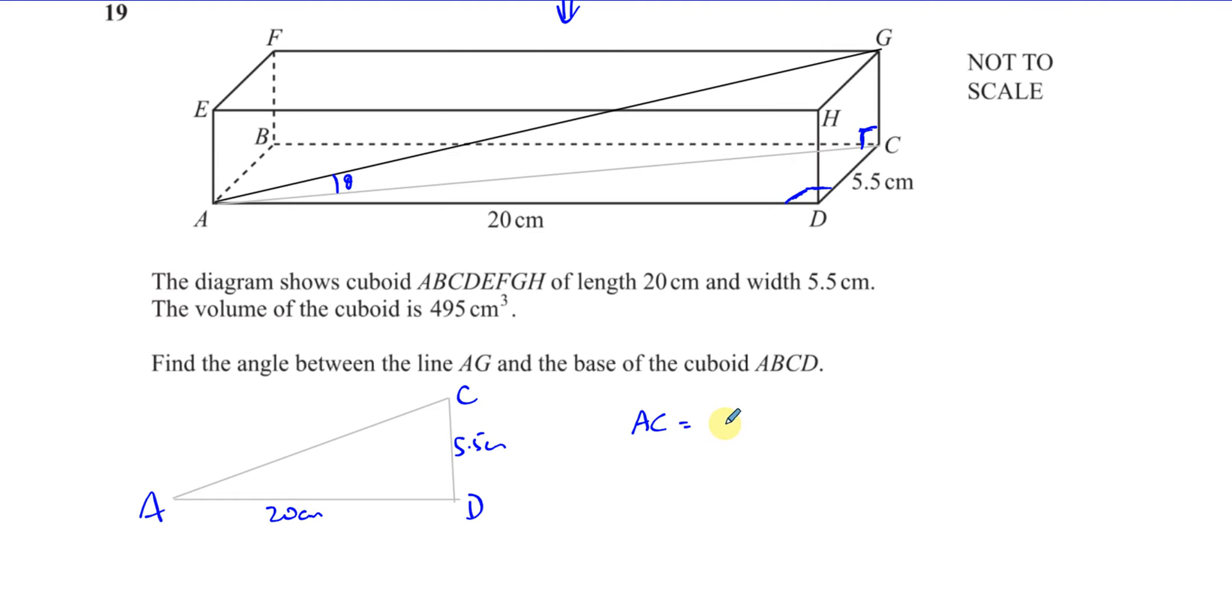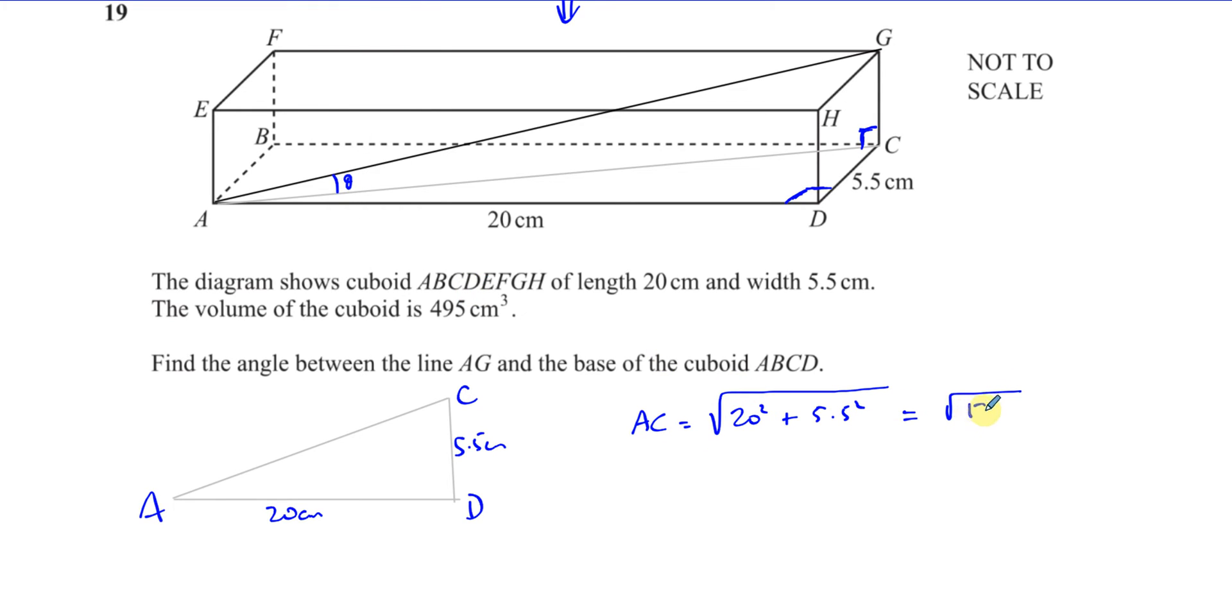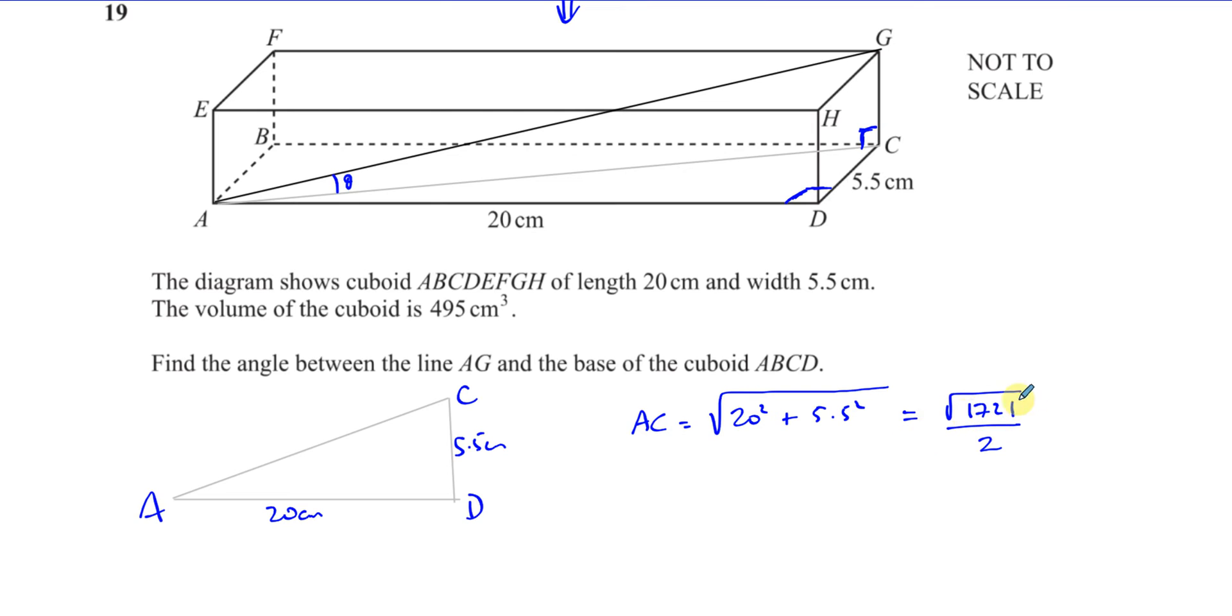So I can find what AC is. I can say AC is equal to, by Pythagoras, the square root of 20 squared plus 5.5 squared. So we can just put it in our calculator. That gives us 1721 over 4, which will give you the square root of 1721 over 2. That will give you the length of that line AC. I'm going to leave it in this form because then I'm going to round it at the end.